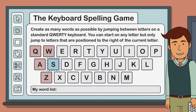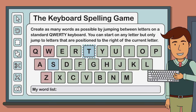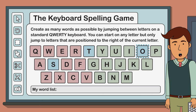I can, however, jump to any of these letters in green because they are positioned to the right of the letter S. Let's jump to the letter T on the top row. Now that we are positioned on the letter T, the number of letters we can jump to next is reduced. Remember, we can only jump to letters that are positioned to the right of our current letter. Let's jump to the letter O.